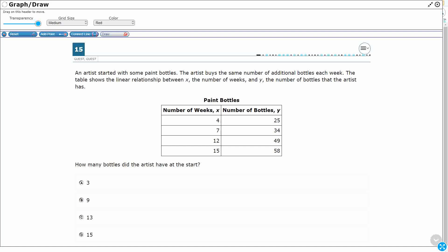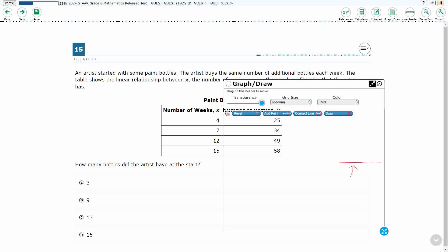Alright, so we have an artist here, and the artist is starting to paint with some paint bottles, buys the same number of additional bottles each week. Alright, so that means that we are going to be able to say we have a constant rate. That's really what that language is referring to. When we have the same number of bottles that are being bought each week, that's an increase that's going to be constant. The table shows a linear relationship that also gives us a clue that we have a constant rate between x is the number of weeks, y is the number of bottles. So how many bottles did the artist have at the start? Well, when we see a linear relationship, hopefully that is giving us a clue.